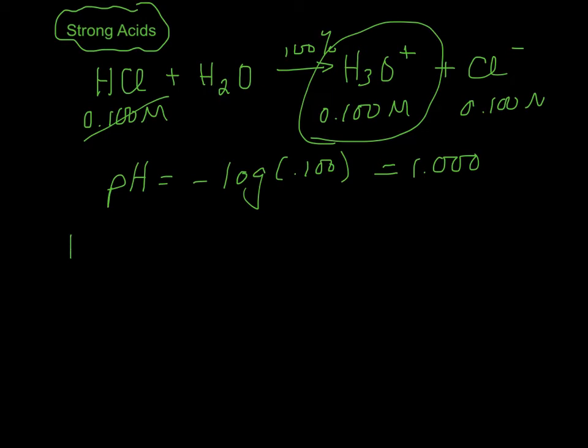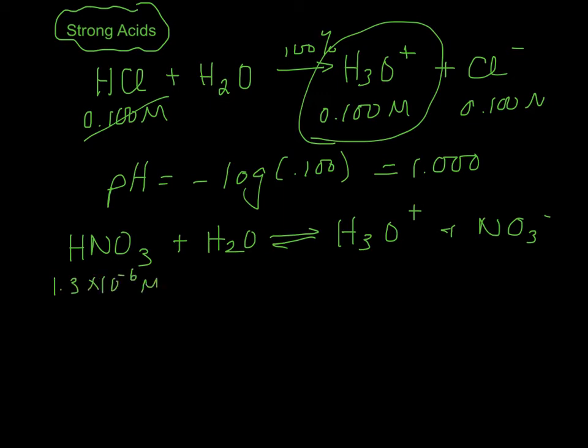Let's say for instance I had some nitric acid. I'm going to write my hydrolysis reaction. So I've got hydronium ion and nitrate. So let's say for instance I started with 1.3 times 10 to the minus 6 molar of this. Single arrow. It completely ionizes. So this is all gone. And I make 1.3 times 10 to the minus 6 molar of this.